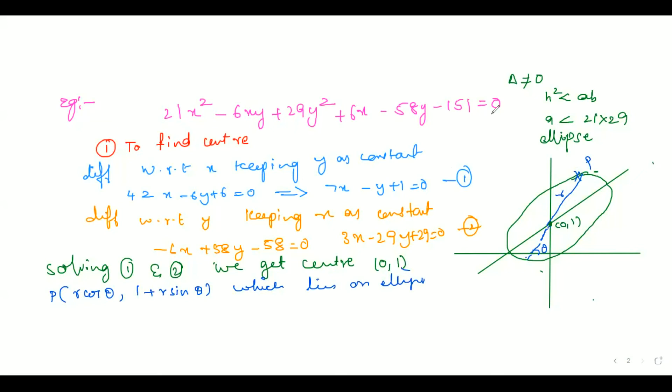So upon substituting this point P on ellipse, we will be able to express r in terms of theta. So let us put it in this expression. This is 21 r squared cos squared theta minus 6 r cos theta into 1 plus r sine theta plus 29 into 1 plus r sine theta whole squared plus 6 into r cos theta minus 58 into 1 plus r sine theta minus 151 equals 0. Although it's a lengthy expression, you can have your own way to simplify it further. And the final step what I'm going to get after simplification is r squared equals 180 divided by 25 minus 4 cos 2 theta minus 3 sine 2 theta.